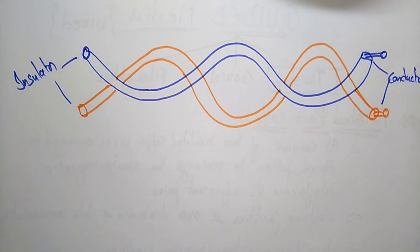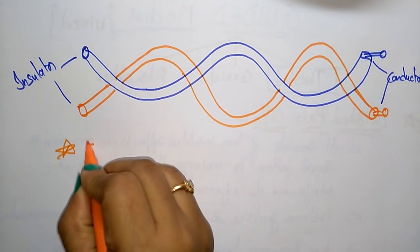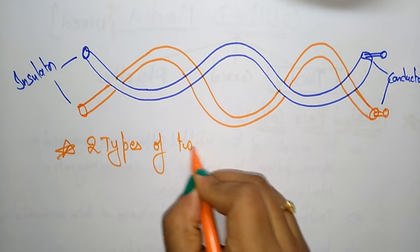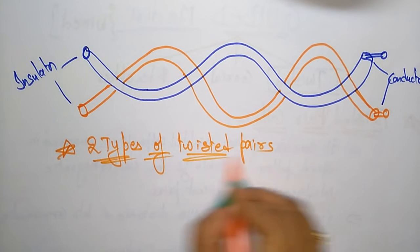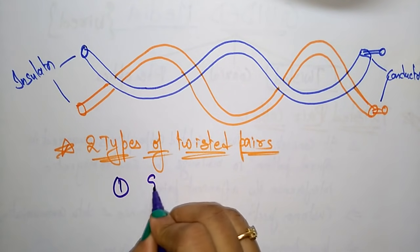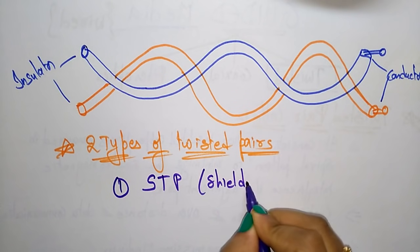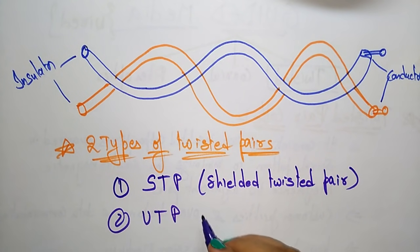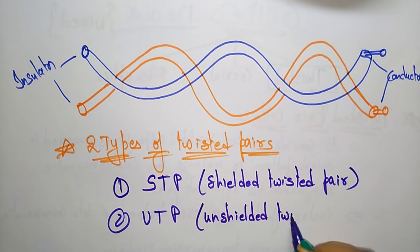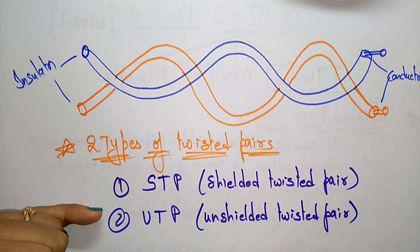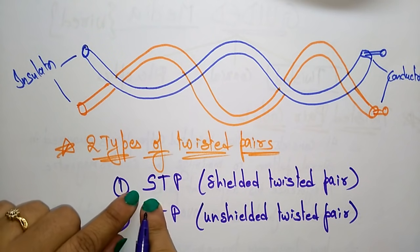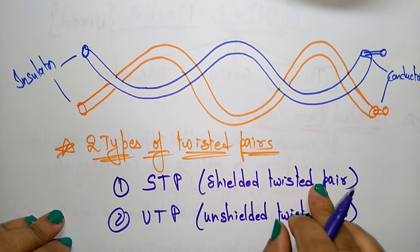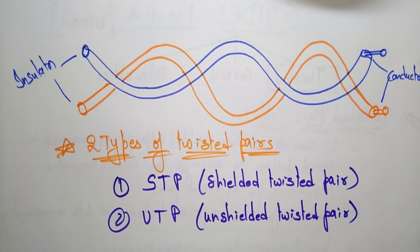This twisted pair cable is divided into two types. One is STP, which we call shielded twisted pair, and the other is UTP, unshielded twisted pair. The name itself says that a shield — a cover — is there to protect the wires in STP. In unshielded twisted pair, there is no extra shield cover for the twisted pair.